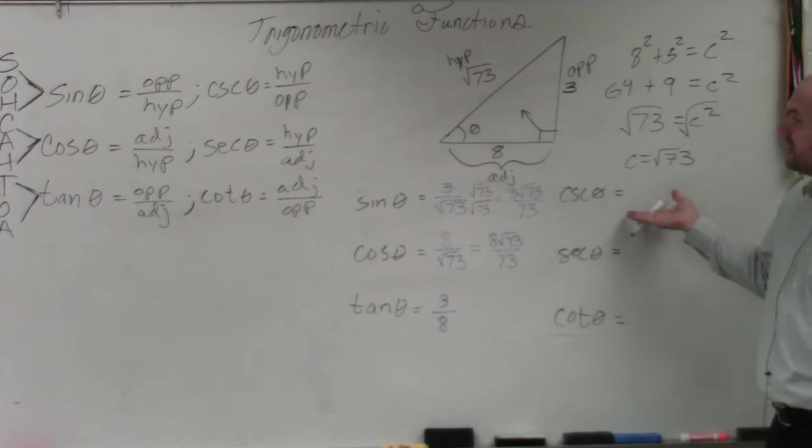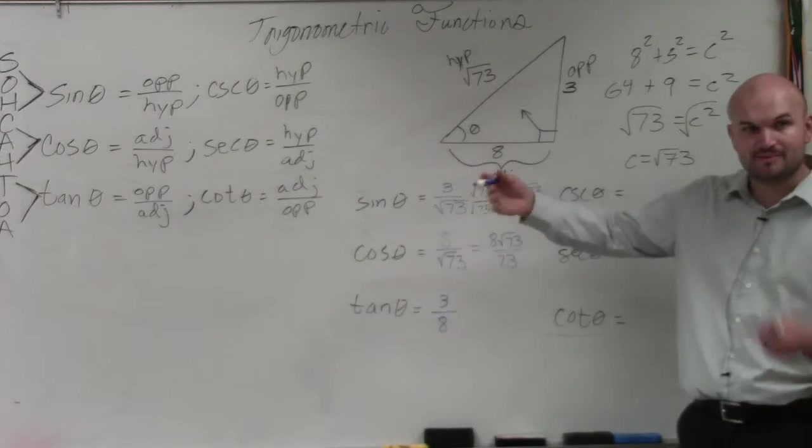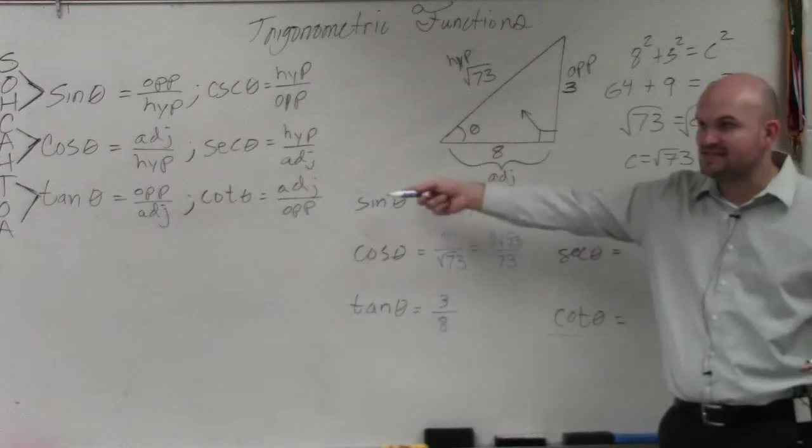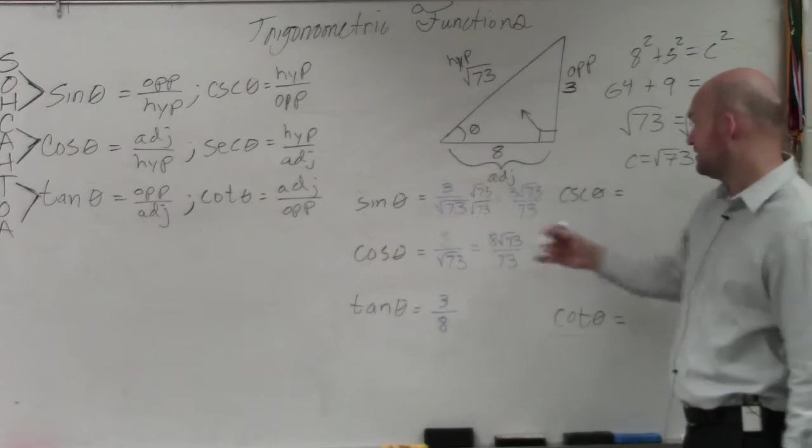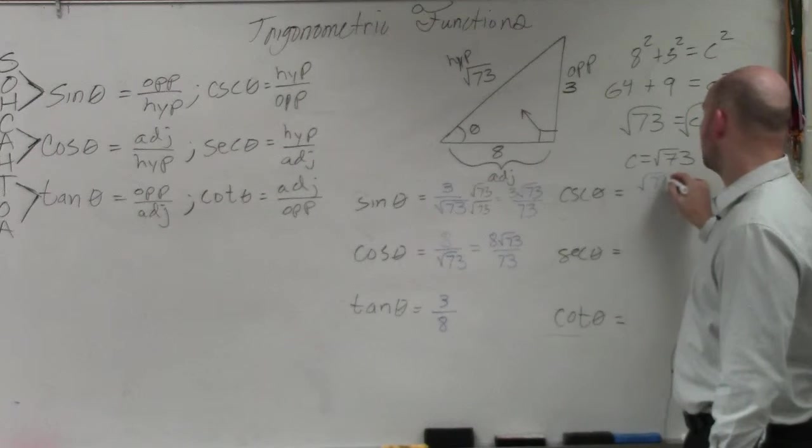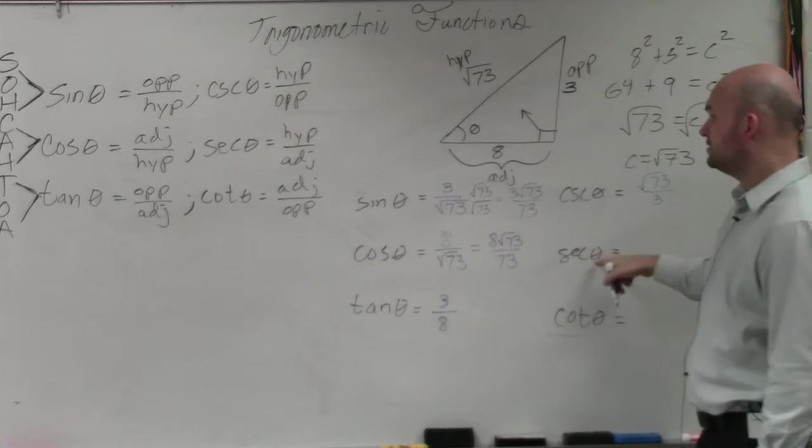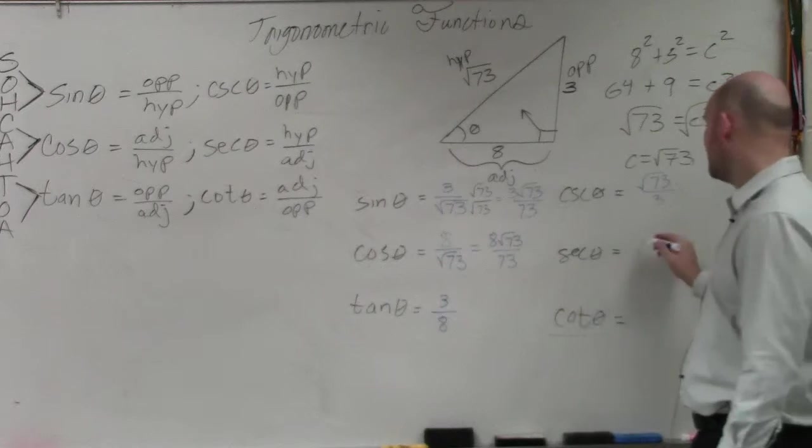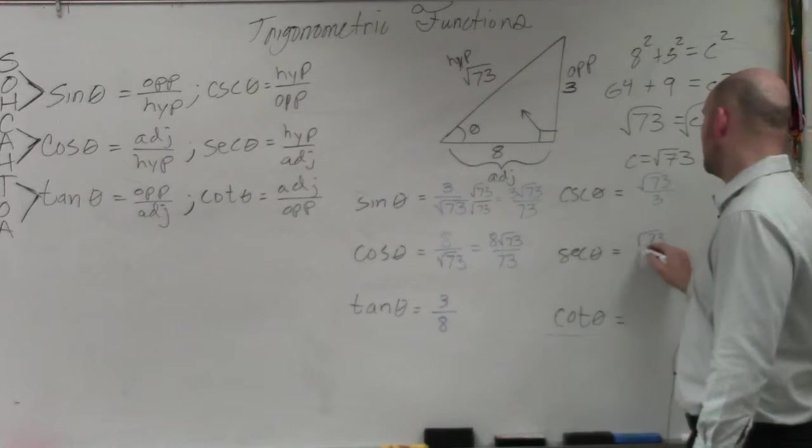Over here, cosecant. Remember, cosecant is just the reciprocal of sine. So I'm just going to reciprocate this. Square root of 73 over 3. Secant, just the reciprocal of that. Square root of 73 over 8.